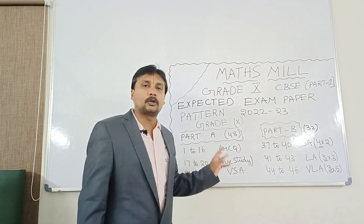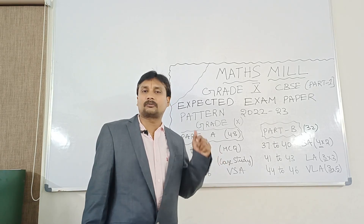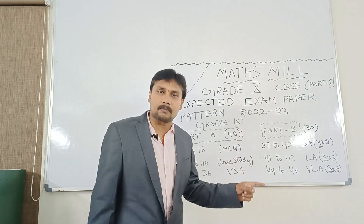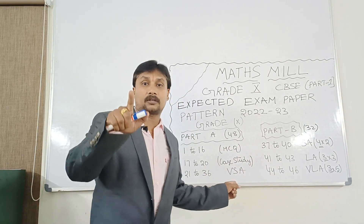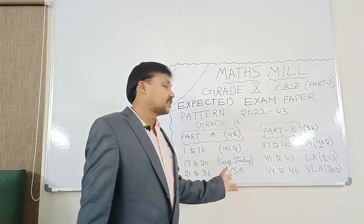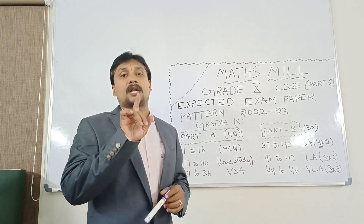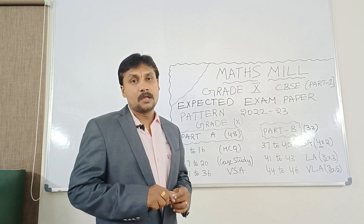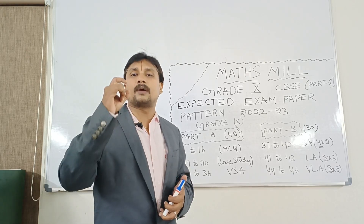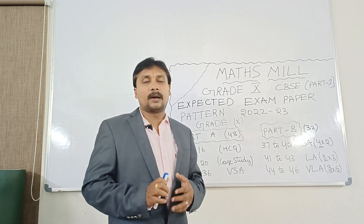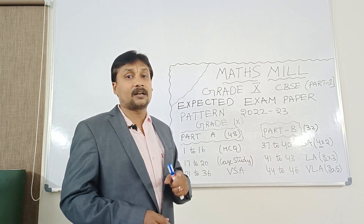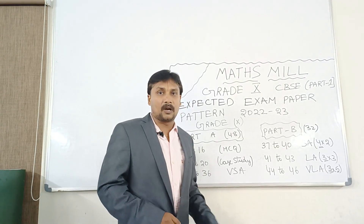Questions 21 to 36 consist of 16 questions — each question carries 1 mark, so total 16 marks. These are very short answer questions, meaning one-word answer questions. You have to give the answer directly or use one or two steps, but there is no need to fill pages. Even if you fill a page and get the correct answer, you will get only one mark. So 16 plus 16 plus 16 equals 48 marks for Part A.